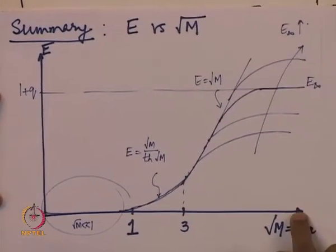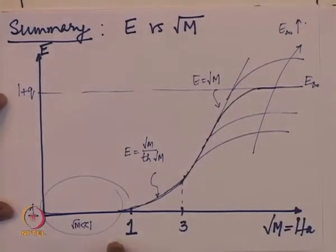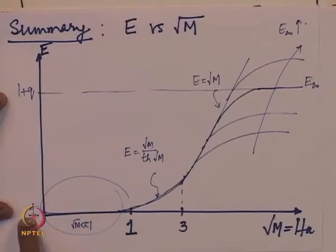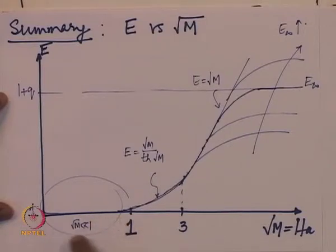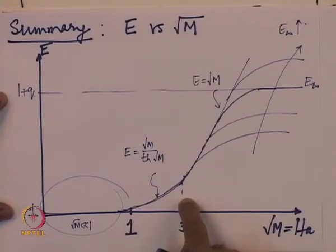Towards the end of yesterday's lecture, we were considering the enhancement factor versus Hatta number curve, and we saw that the curve generally has a shape of this kind. When the value of the Hatta number is very small, we are in the slow reaction regime — the enhancement factor equals 1, meaning the mass transfer coefficient equals the physical mass transfer coefficient. As root M approaches a value of 1, the enhancement factor curve starts to lift off. When the Hatta number is greater than 3, we enter the fast reaction regime, in which the bulk of the liquid is not carrying out any reaction.